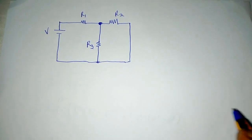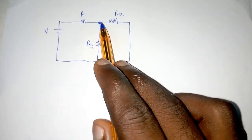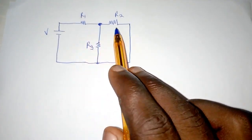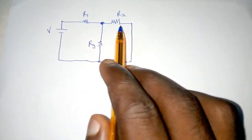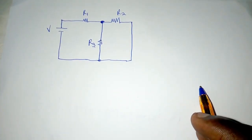In this circuit, because there is a junction or a node between this R1 and R2, then we can clearly see that these resistors, R1 and R2, are not in series.